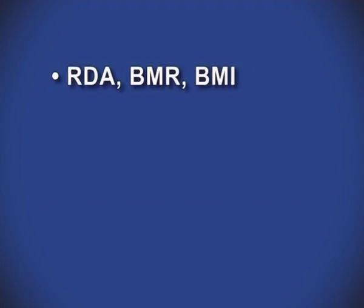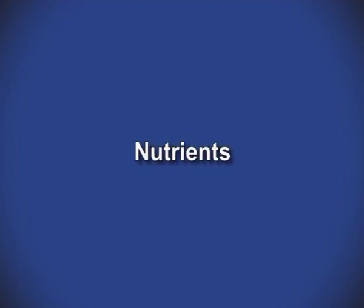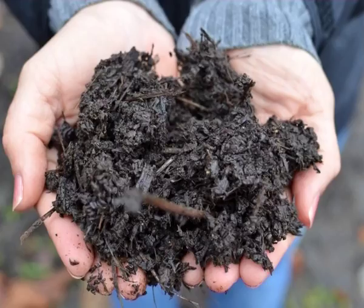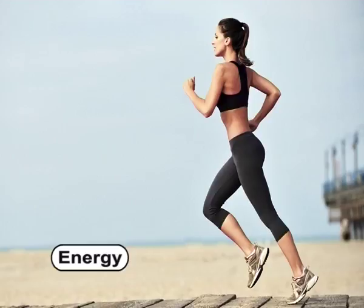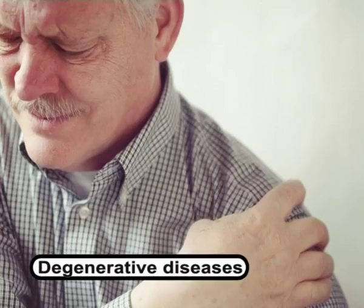First, nutrients. Nutrients, which are basically considered as organic materials in foods, help in nourishing the body. They are the chemical substances obtained from food and used in the body to provide energy, to support growth, maintenance and repair of body tissues. They may also reduce the risk of degenerative diseases.